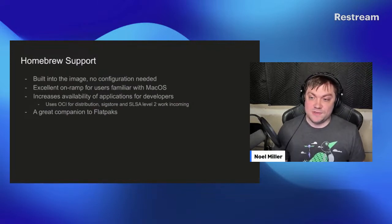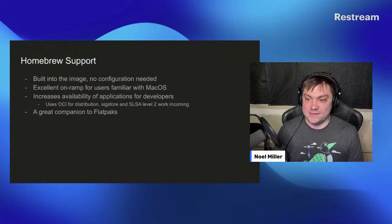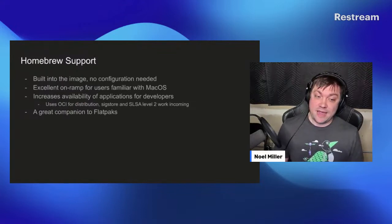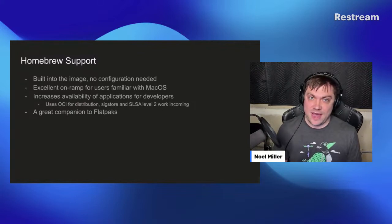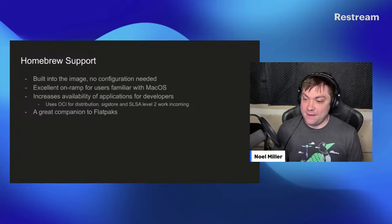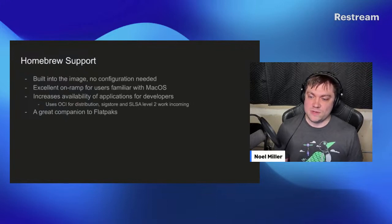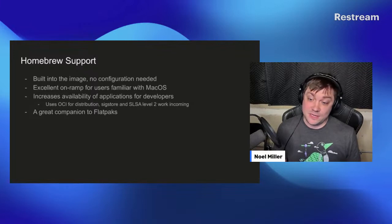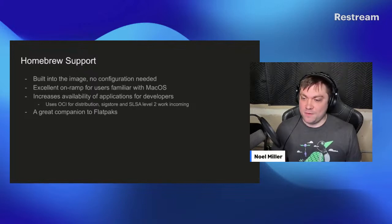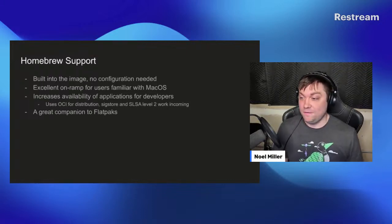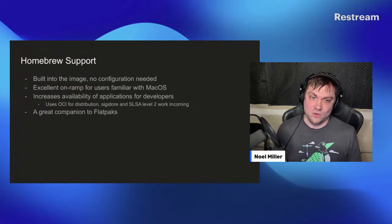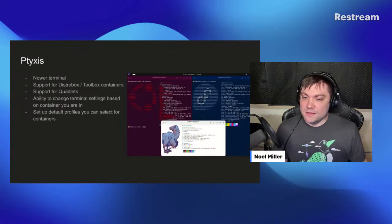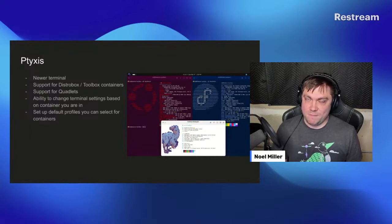Another big change is that we have Homebrew support inside our Bluefin, Aurora, and Bazite images — no configuration needed, it's just available out of the box. It's an excellent on-ramp for folks familiar with macOS who are used to developer tools through brew. It increases app availability for developers. It uses OCI for distribution, Sigstore for signing, and SLSA level 2 work is incoming. It's a great companion to Flatpaks, which is primarily what we recommend for installing software.